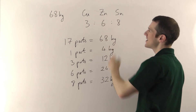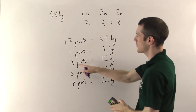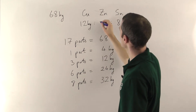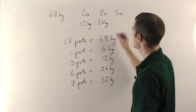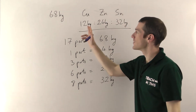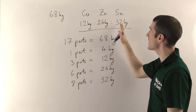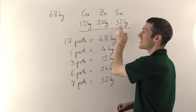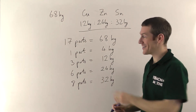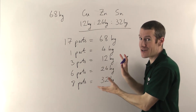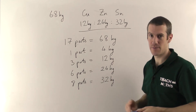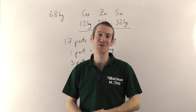So the amounts needed are: 12 kilograms of copper, 24 kilograms of zinc, and 32 kilograms of tin. Written with colons: 12 : 24 : 32. When you add these together you should get back to 68 kilograms — if it doesn't add up to the total weight, your answer is wrong and you need to check your working. That's about as hard as you're ever likely to see with ratios — the principle is always the same: find out how much one part is worth, then multiply up to find all the different parts. My name is Jonathan Hicks and you're watching Teach Me Maths.